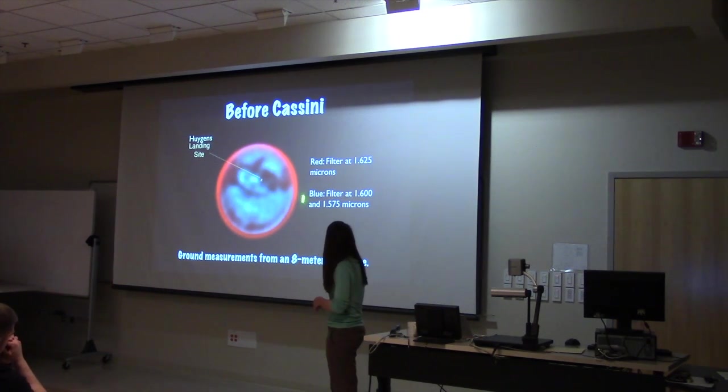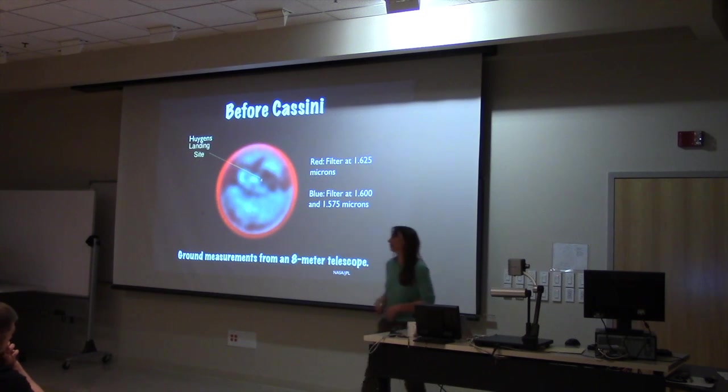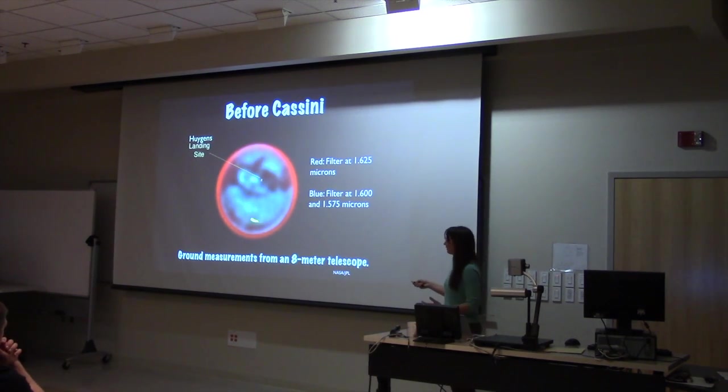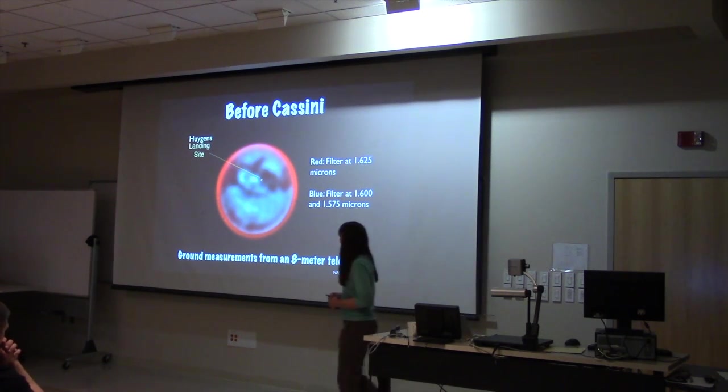So if you look in those wavelengths, you can get some idea about the surface. So basically, all we knew before Cassini was that some of the surface is light and some of the surface is dark from this image.